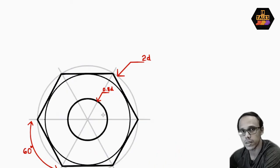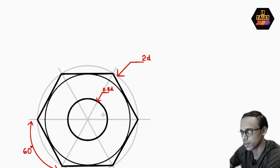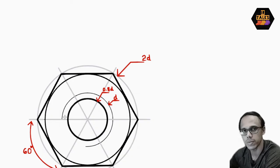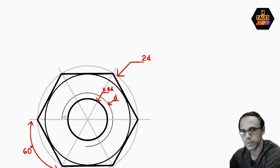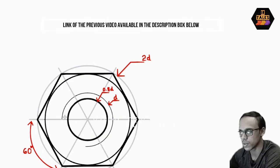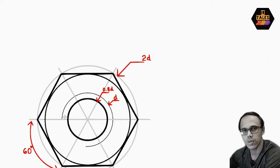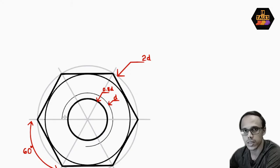The major diameter here is D, shown as three-quarter circles, and this will be the Type B line. You will see the Type A line and Type B line in the top view. With that, the top view is complete.